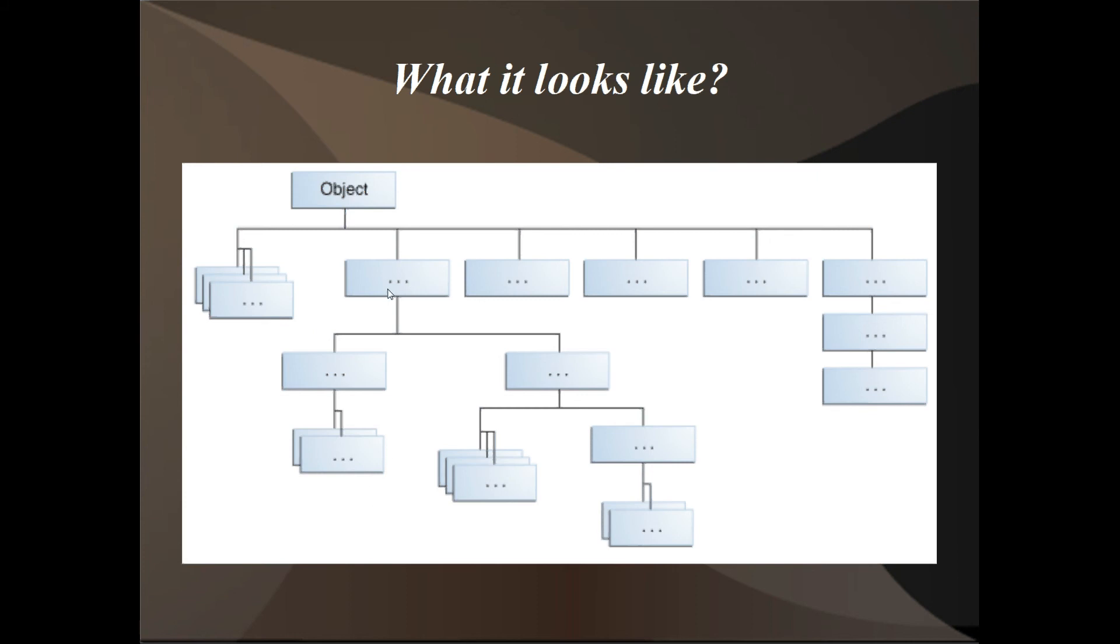So whatever this class is right here, all these classes down below it have the functionality of this class and the object class. This contains basically everything an object has. Let's say it's a dog. Now this class right here contains all the methods and everything a dog has, as well as object.